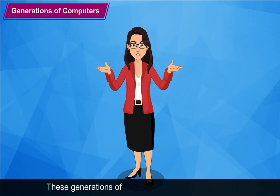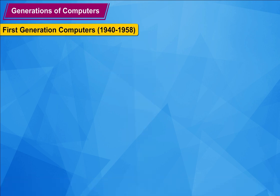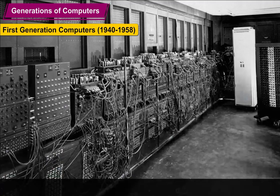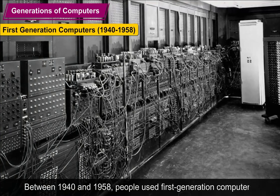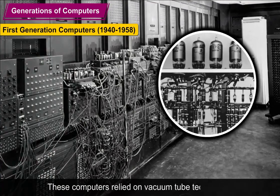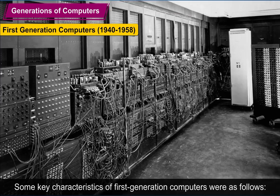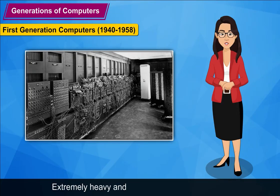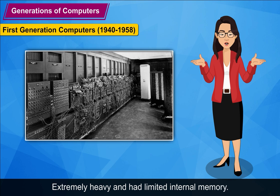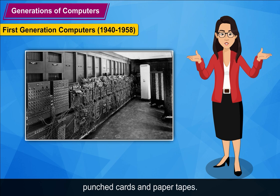These generations of computers are classified based on the technologies used to design them. First Generation Computers (1940–1958): Between 1940 and 1958, people used first generation computers. These computers relied on vacuum tubes. Some key characteristics include: enormous in size, expensive and slow to operate, extremely heavy, and had limited internal memory. Inputs were provided using punched cards and paper tapes.